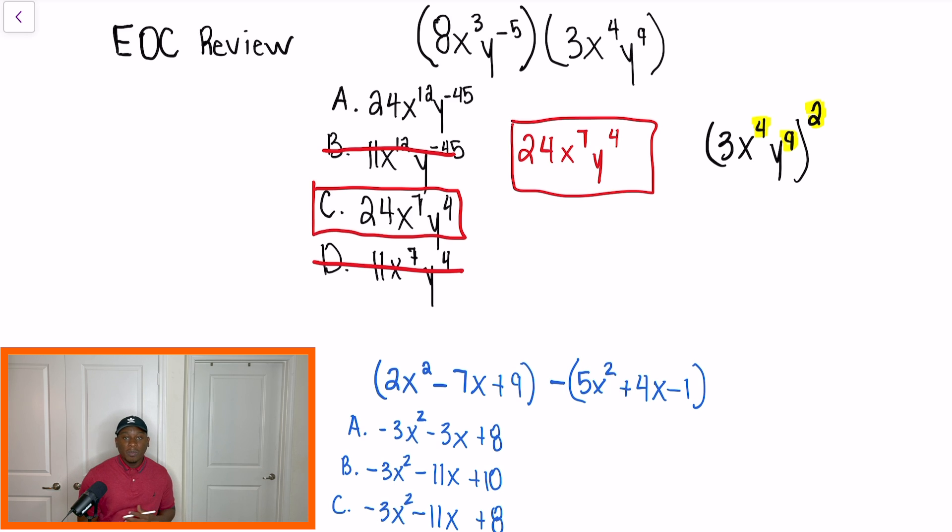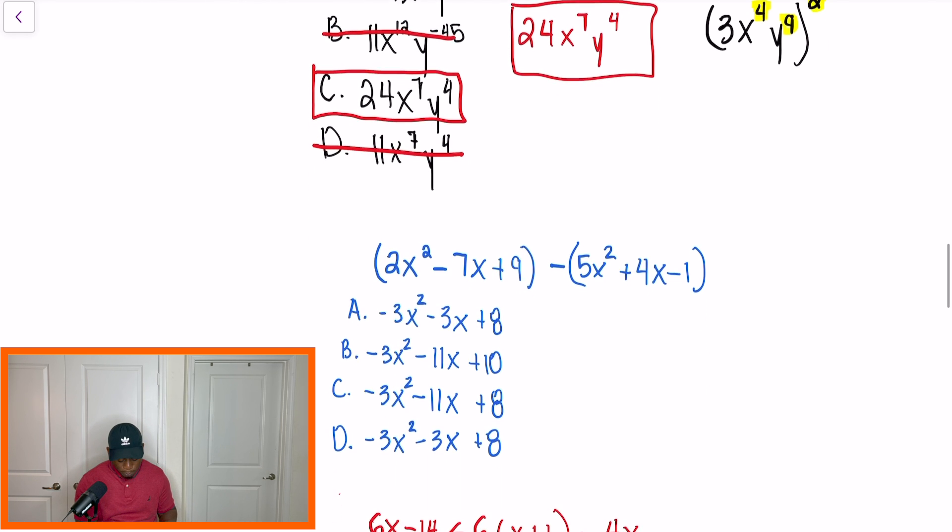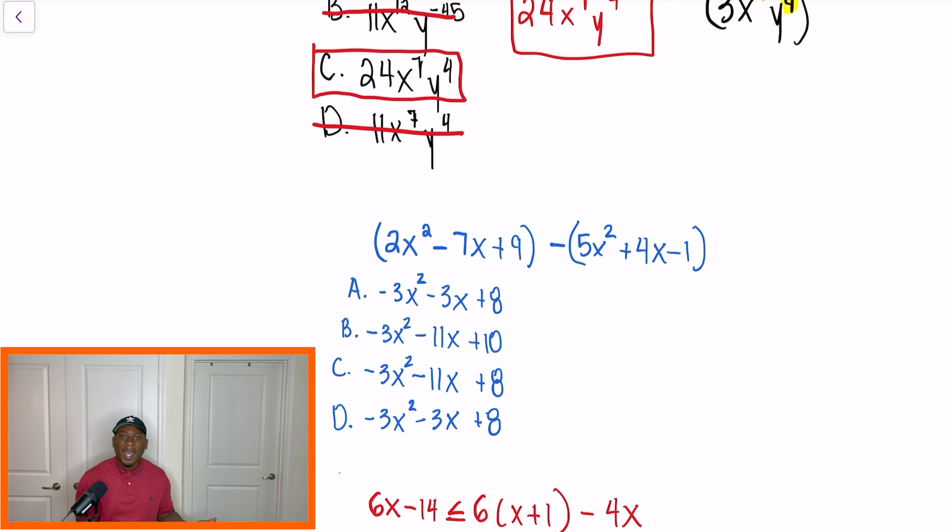All right. So problem number two, they're asking us to basically combine two expressions. Combine like terms, combine expressions, same thing. But there is a very important trick, and we're going to highlight that trick. So basically, that negative sign, that subtraction sign, it's going to change the sign of every number after.